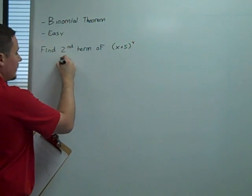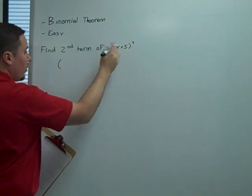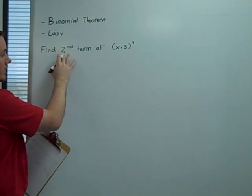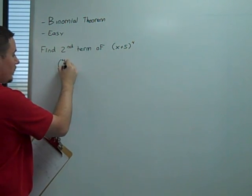So the coefficient is going to be 4 choose, not 2, but the one before 2, which is 1.